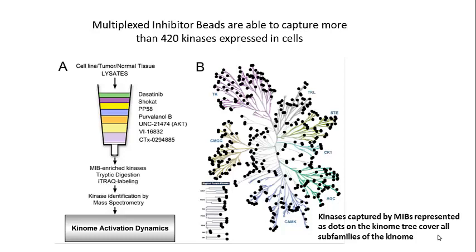We've characterized each bead individually for the kinases it specifically binds. Using a combination of multiplexed inhibitor beads in the column, we've been able to capture more than 420 of the expressed kinases out of the 518 kinases found in the kinome. As shown in the kinome tree, kinases captured by MIBs are represented as black dots, and they cover each different subfamily of the kinome. So using these multiplexed inhibitor beads, we're able to capture members of each of the different subfamilies of the kinome and measure their activation state in a single mass spectrometry run.